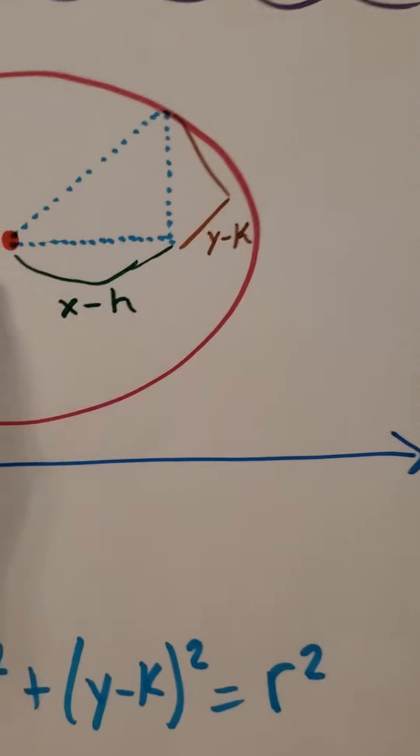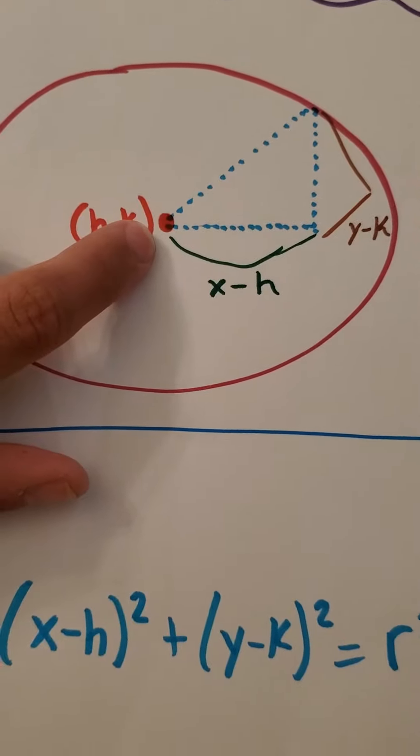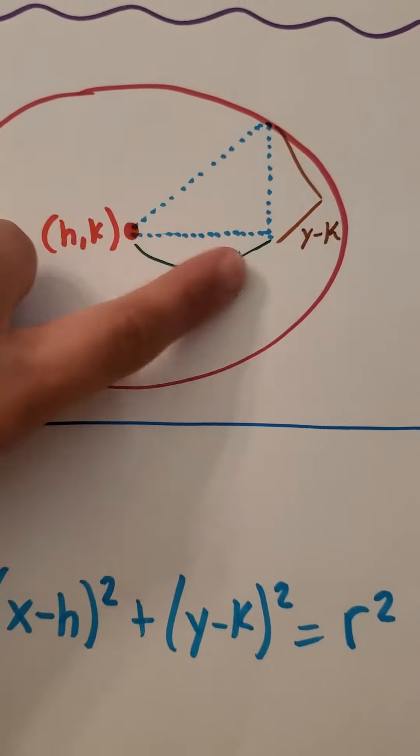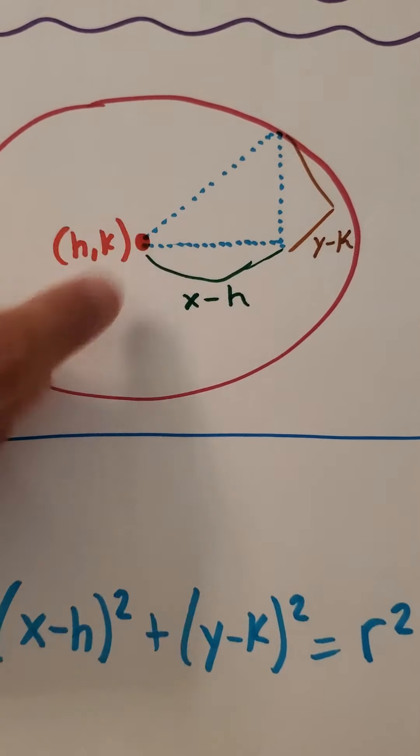So here's our first point. This is right in the middle of the circle, typically where the radius would come from, from any of these points. It always starts in the center.